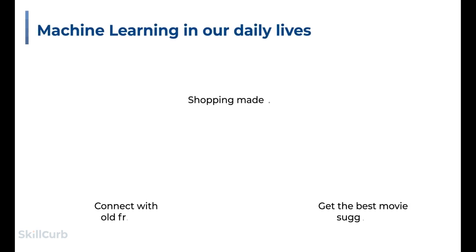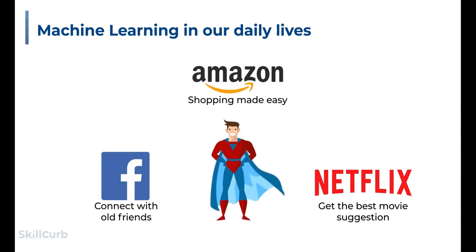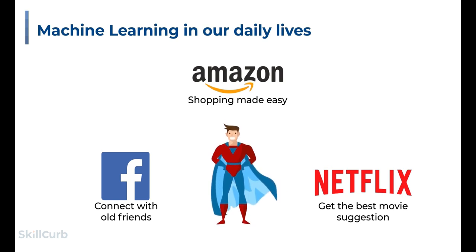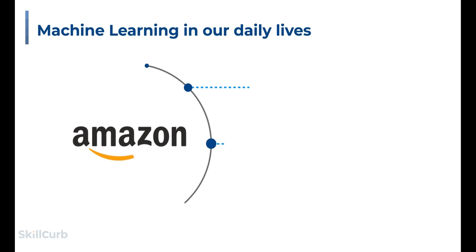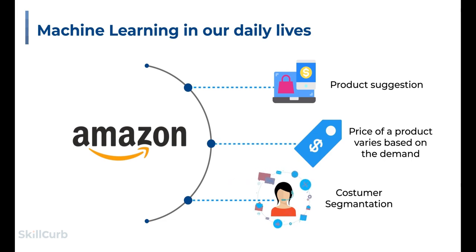Facebook uses machine learning algorithms that rank feeds, ads, and search results, and creates new text understanding algorithms that keep spam and misleading content at bay. Amazon suggests new items or products you might find of interest based on your buying patterns. Similarly, Netflix suggests movies and series based on your video watching trends. Looking further at Amazon, more features enabled by machine learning include customer segmentation based on purchasing behavior and variation of product price based on demand.